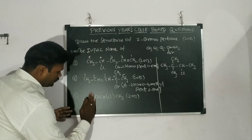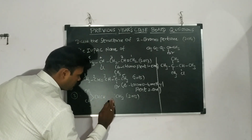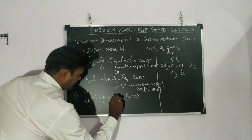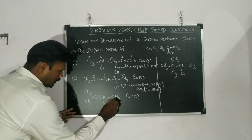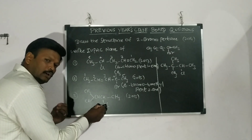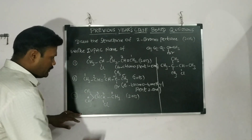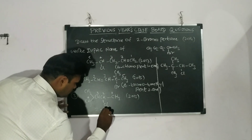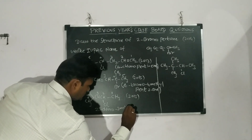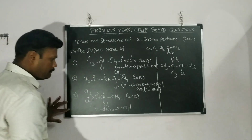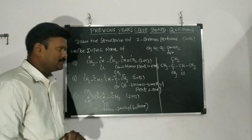The next compound — we write CH3 and CH3 here to avoid confusion. We have to look for the longest chain. The chlorine will get the lower number, so we number from that end: one, two, three, four. The name is 2-chloro-3-methylbutane. This was also asked in the year 2013.